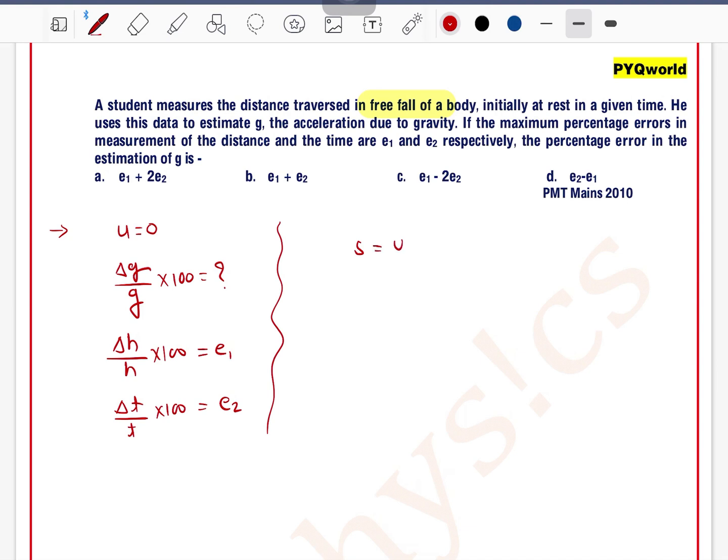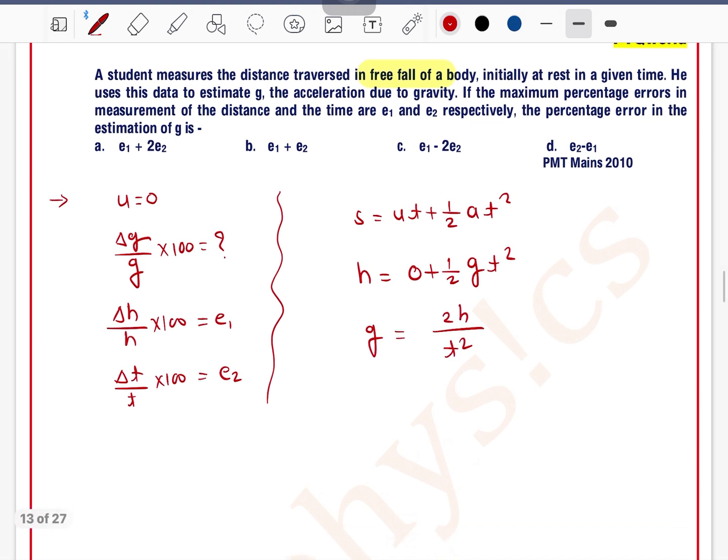We know that the formula which relates all these quantities can be written as s equals ut plus half at squared. Where s is distance, so h equals zero plus one by two g t squared. So we can write g equals 2h divided by t squared.